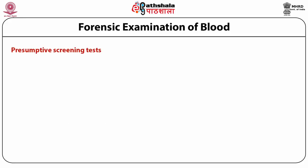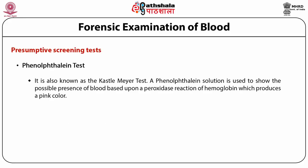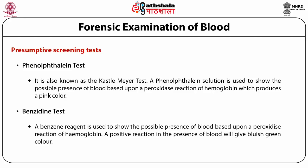The first presumptive test is the phenolphthalein test, also known as the Kastle-Meyer test. A phenolphthalein solution is used to show the possible presence of blood based upon a peroxidase reaction of hemoglobin, which produces a pink color. The second is the benzidine test: a benzidine reagent is used to show the possible presence of blood based upon a peroxidase reaction of hemoglobin. A positive reaction in the presence of blood will give a bluish-green color.